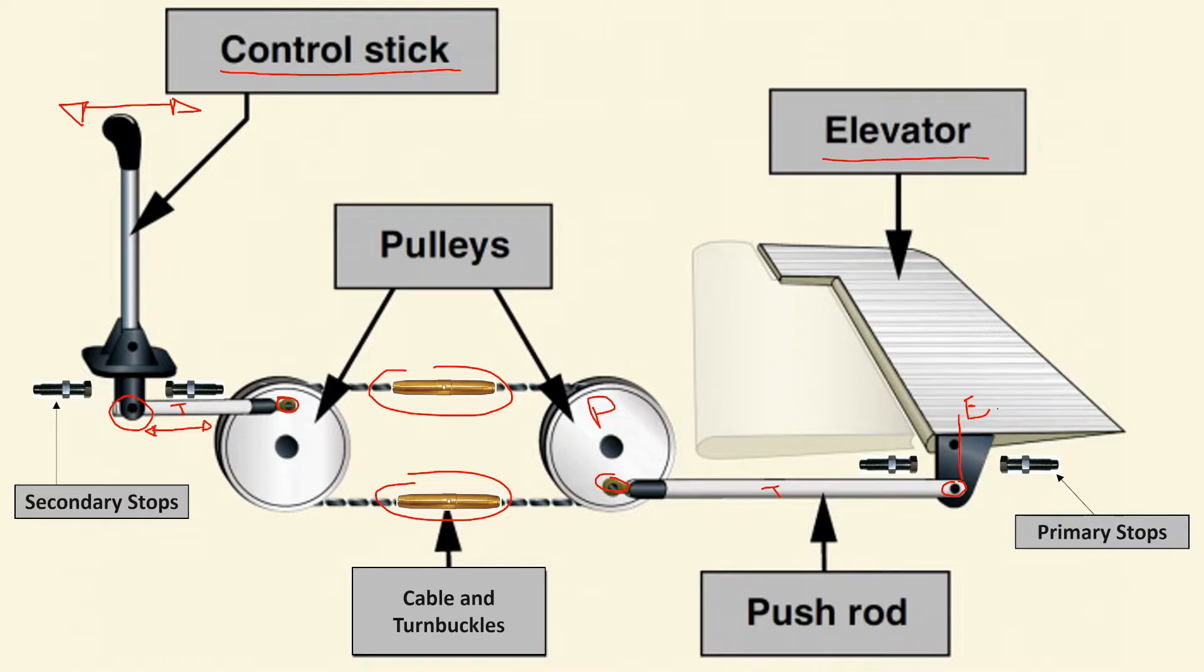There's three things that you have to set to get a flight control rigged. The first thing you need to do is when the control stick is in neutral or no control input, the control surface should be typically at zero degrees or no deflection. How we define the control surface being at no deflection: if it's the elevator, you can think of the chord. Just imagine this is the chord of the elevator. The chord of the elevator is in line with the chord of the horizontal stabilizer. That's your neutral point or zero.